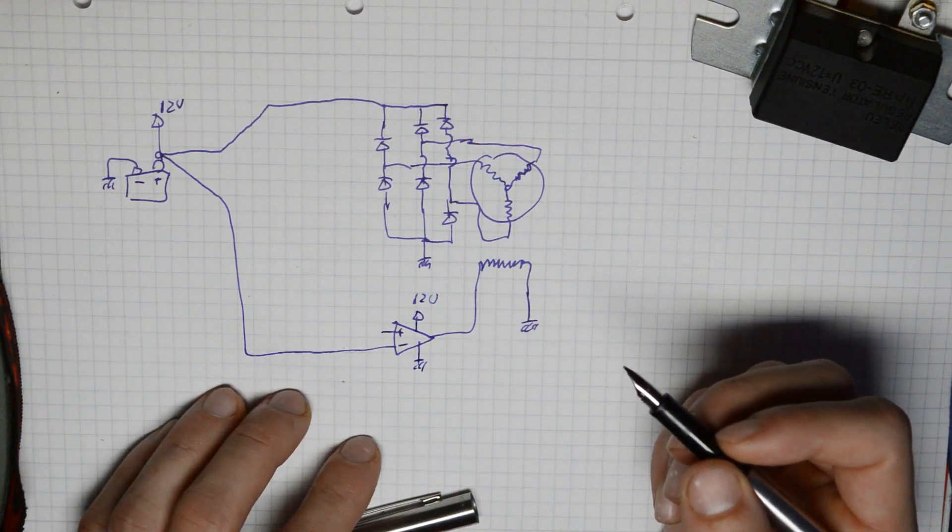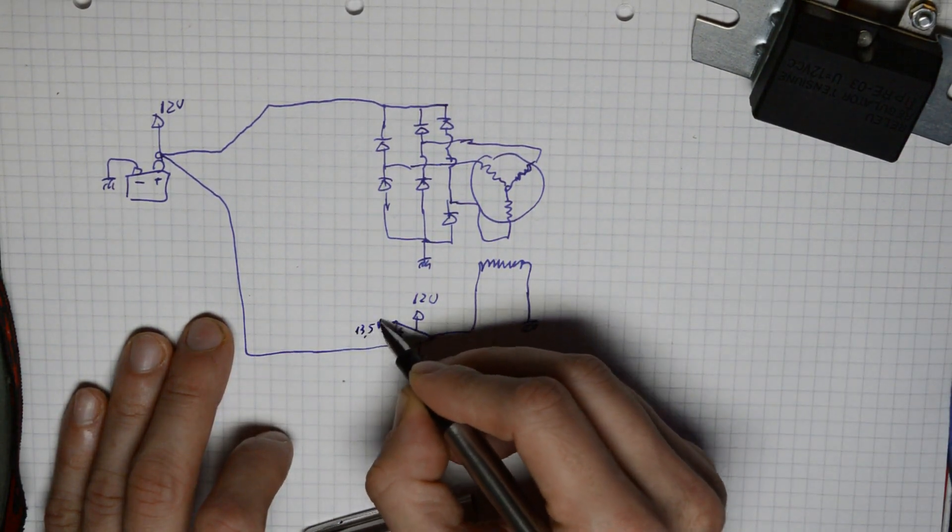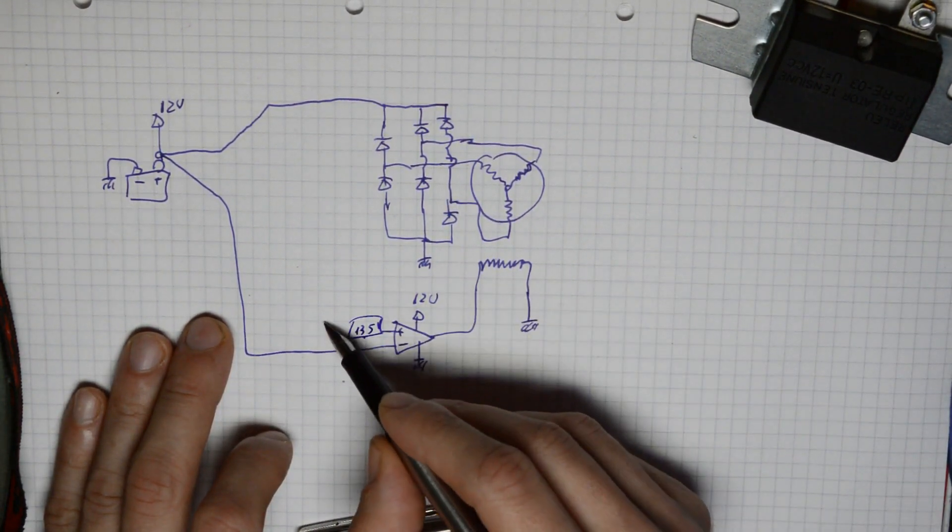Roughly up around 13.5 volts. This is standard for 12-volt batteries, so we've got an internal 13.5 volt reference. And basically this is what our regulator relay is.